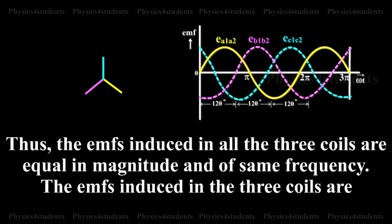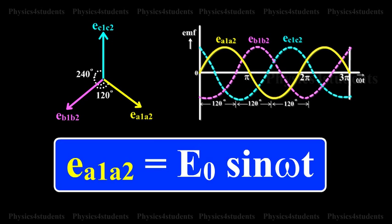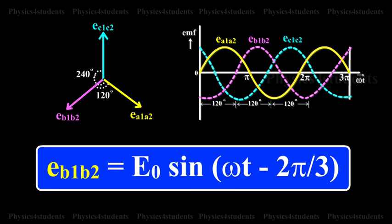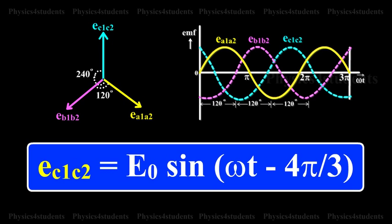Thus, the EMFs induced in all three coils are equal in magnitude and of the same frequency. The EMFs induced in the three coils are: EA1A2 = E0 sin(ωt), EB1B2 = E0 sin(ωt - 2π/3), and EC1C2 = E0 sin(ωt - 4π/3).